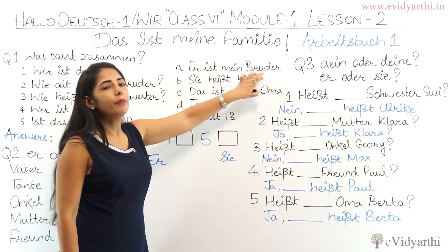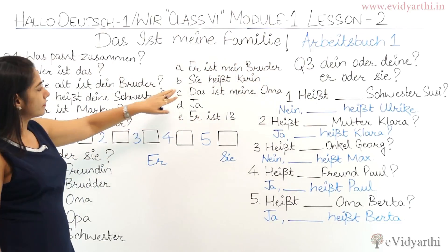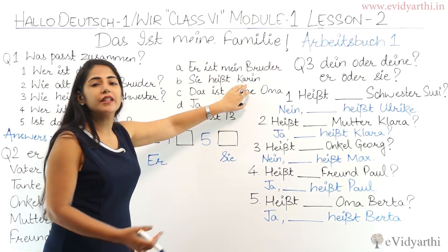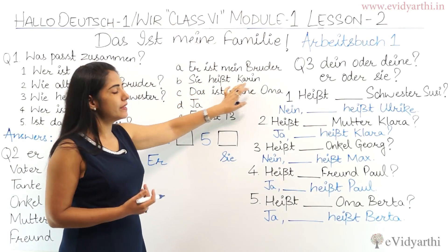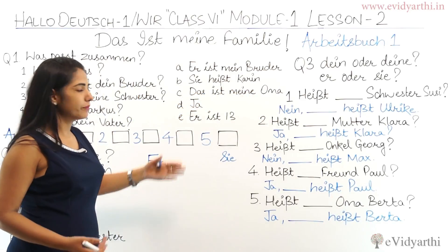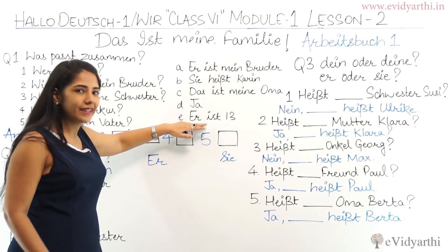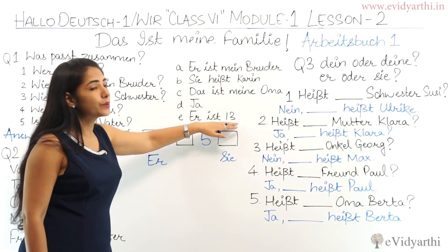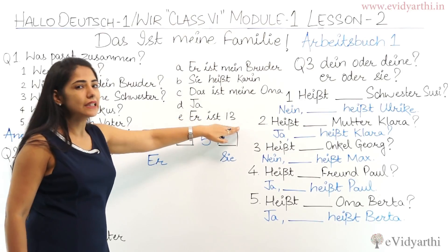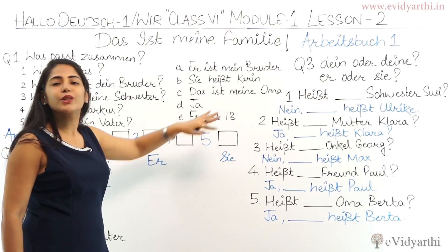'Er ist mein Bruder' means 'He is my brother.' 'Sie heißt Karin' means 'She is called Karin' or 'Her name is Karin.' 'Das ist meine Oma' means 'This is my grandmother.' 'Ja' means 'Yes.' 'Er ist dreizehn' means 'He is 13 years old.'